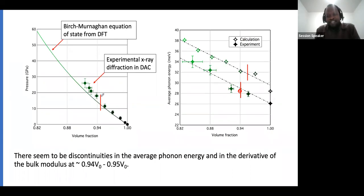This discontinuity is being seen between 0.94 and 0.95, as shown in our calculations that are also similar to the experiments. There seems to be discontinuity in the average phonon energy and derivatives of the bulk modulus at this volume fractional range.